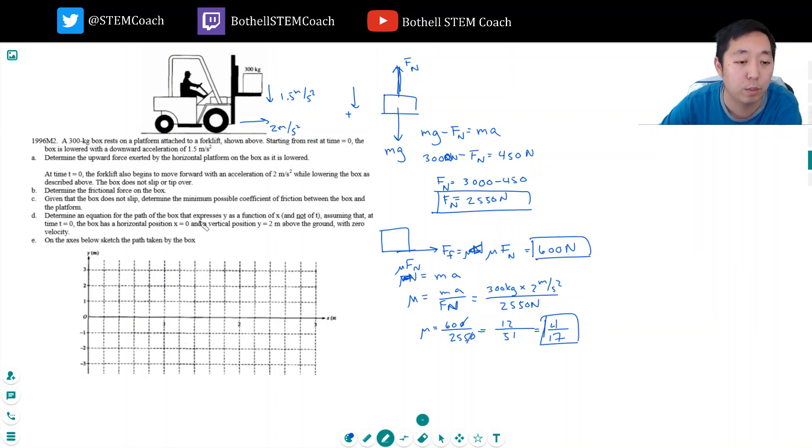Determine an equation for the path of the box that expresses y as a function of x, not of t, assuming that at time t equals 0, the box is at horizontal position x and vertical position 2 meters above the ground with zero velocity. Now I'm trying to figure out how x is related to y. You want to do it in terms of t first and then eliminate t. That's kind of the strategy.